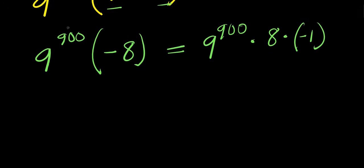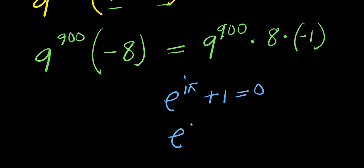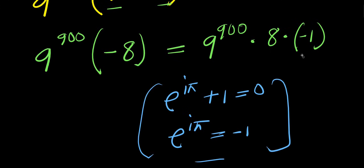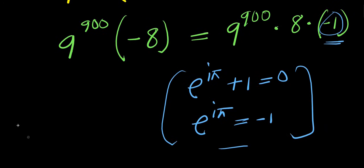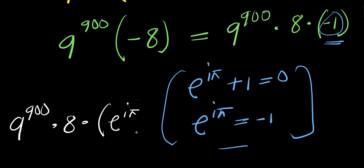Now consider this identity: e^(iπ) + 1 = 0, meaning e to the power of i times pi equals negative 1. Applying this right here, instead of writing negative 1, we replace it with e^(iπ). So we have 9^900 times 8 times e^(iπ).